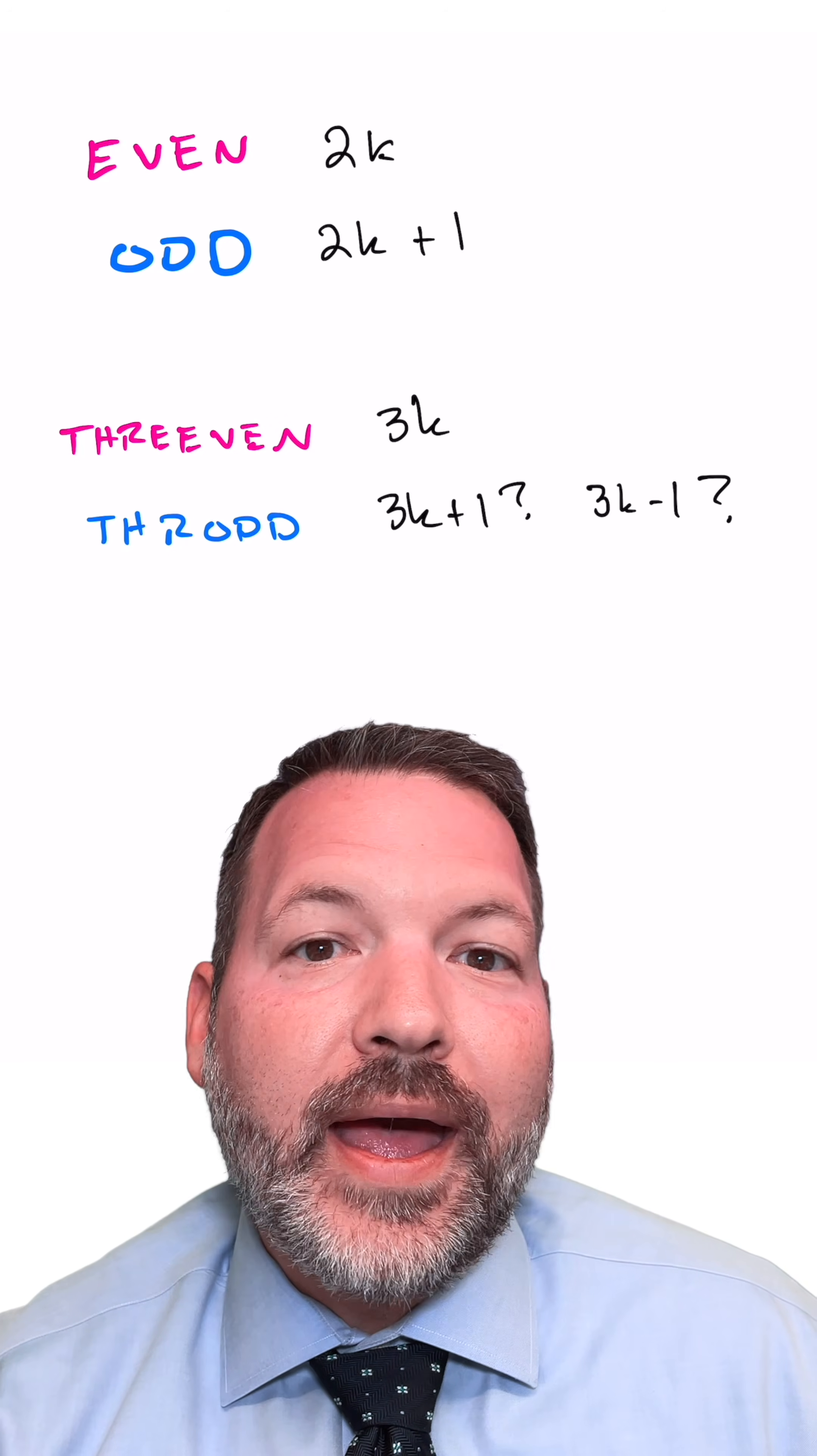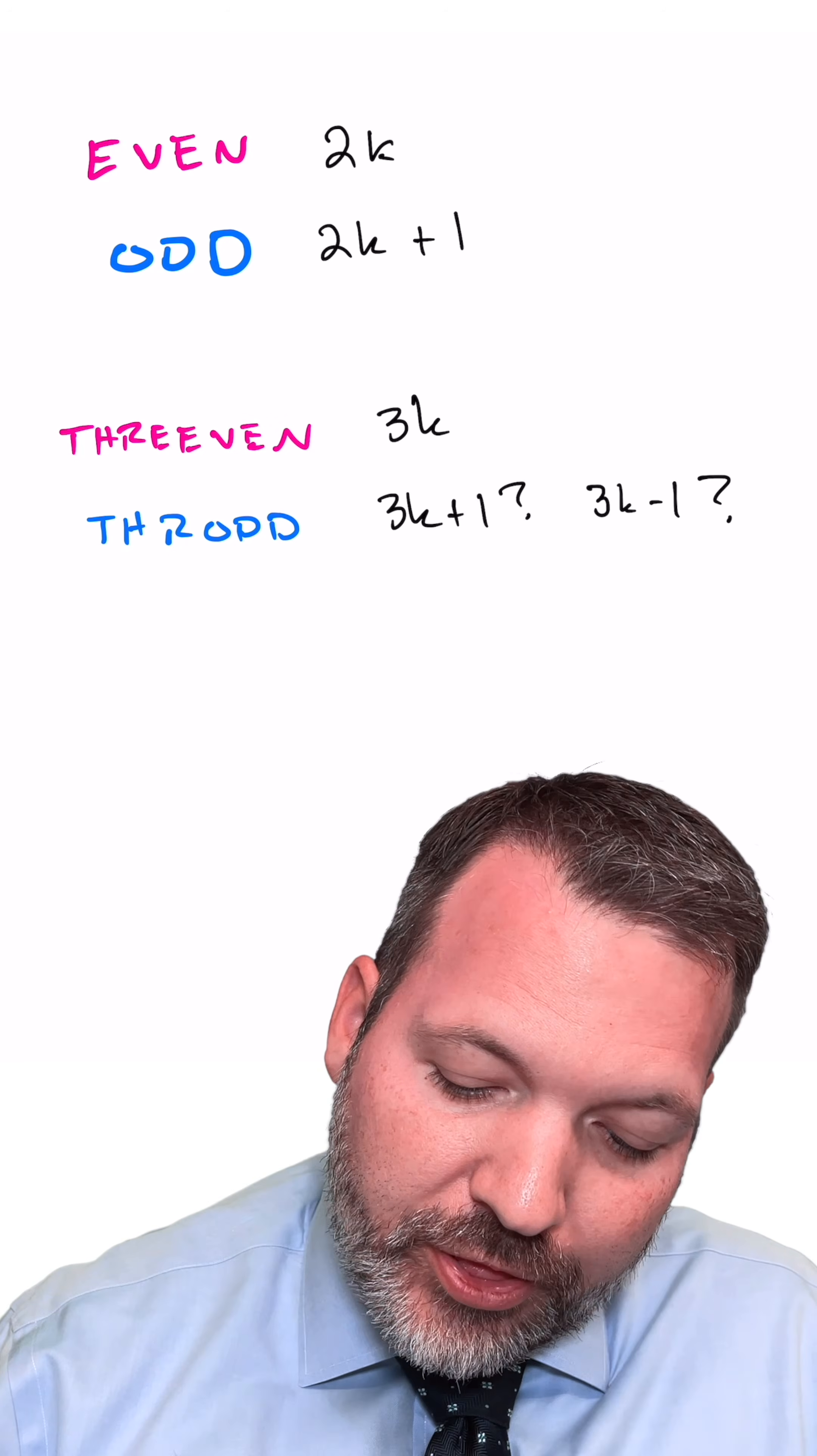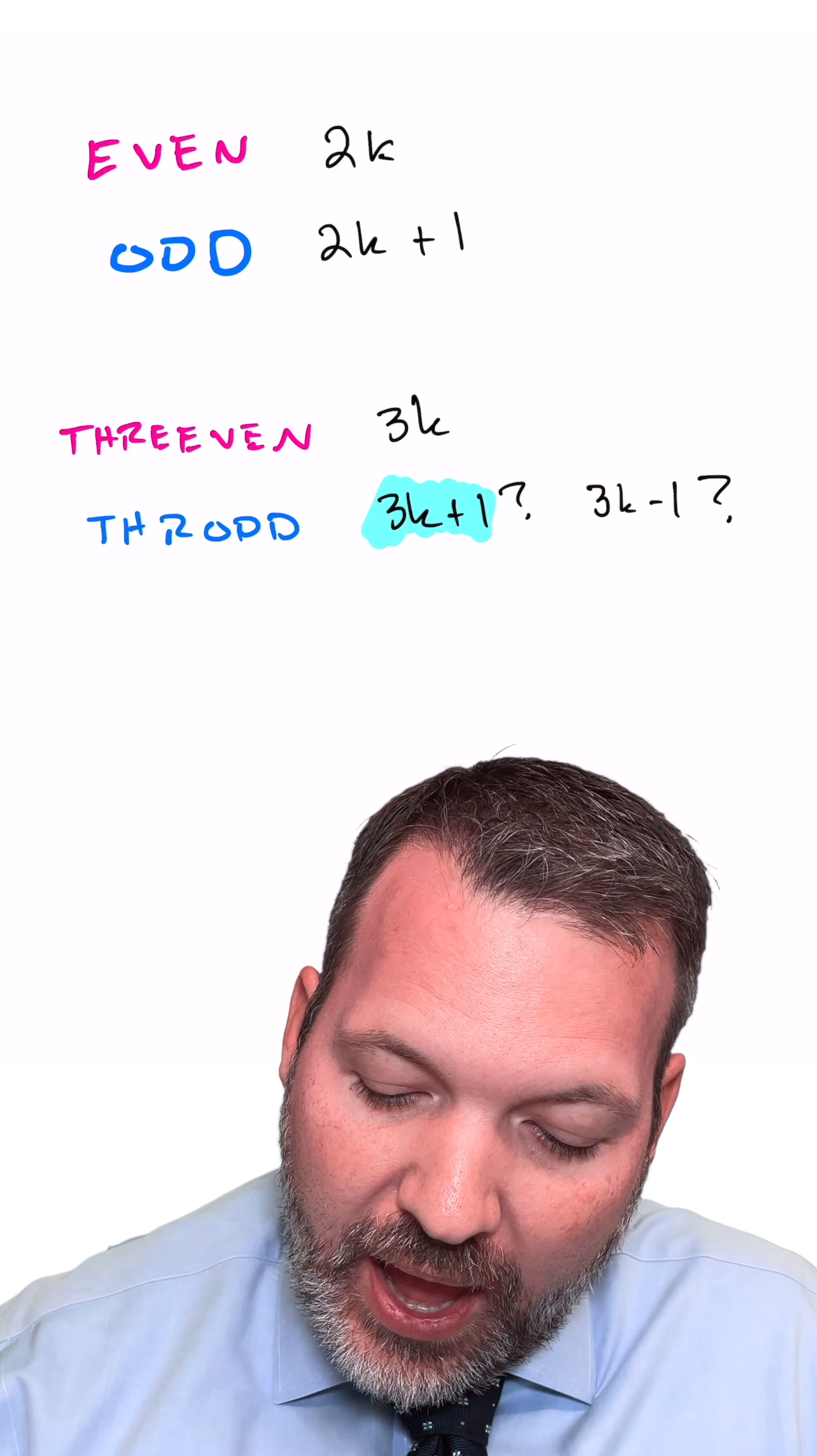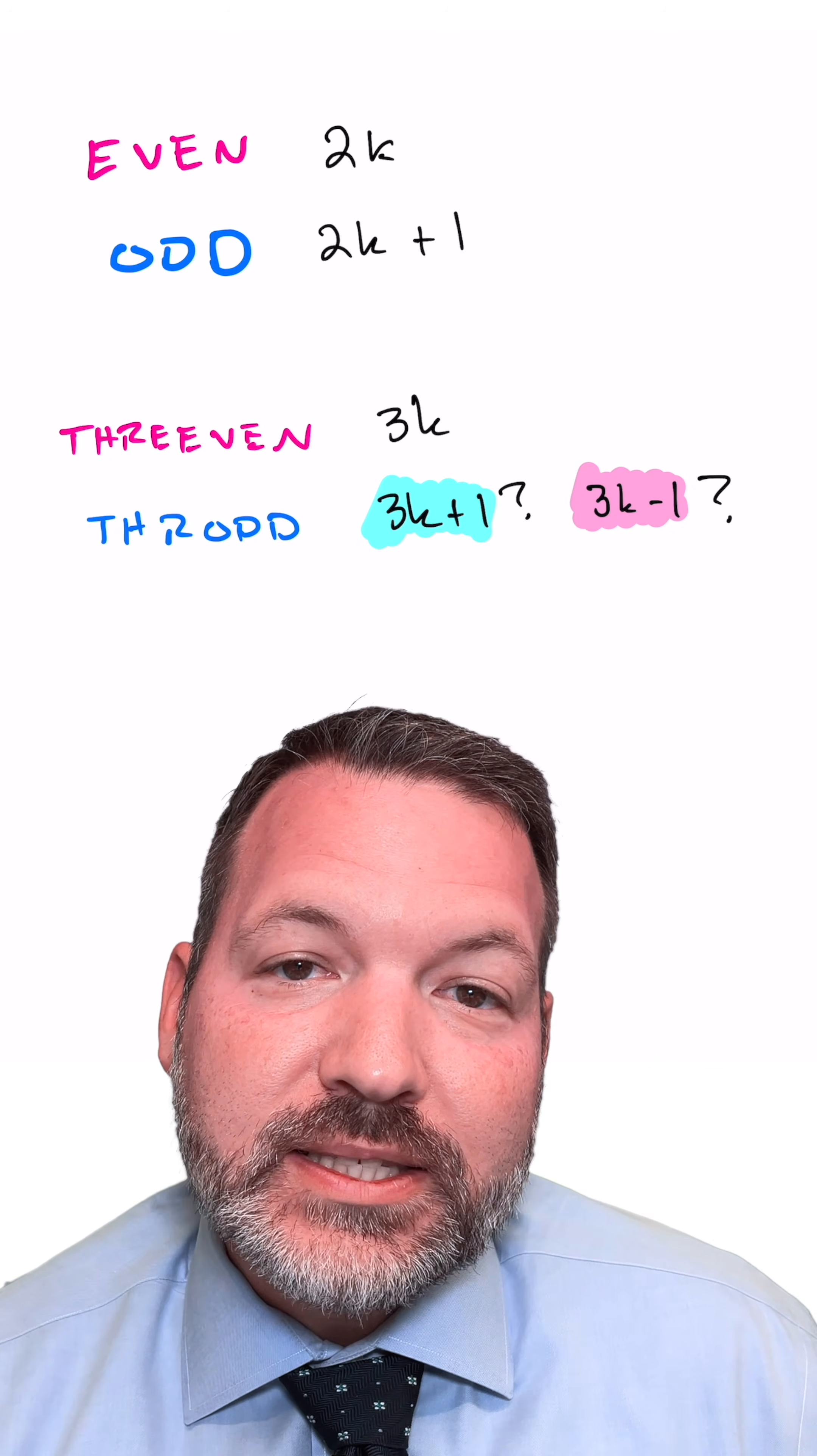Unlike odd numbers, however, there are actually two totally separate universes of throd numbers. There are the numbers that I call throd up, those are the ones that are one greater than a multiple of three, and then there are the numbers that are throd down, those are the numbers that are one less than a multiple of three.